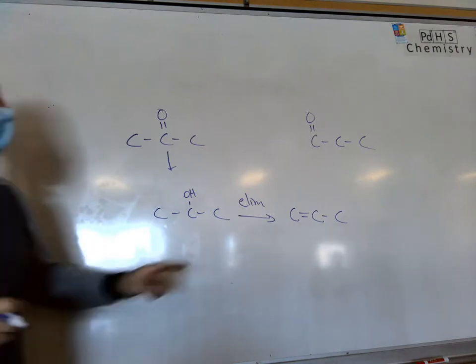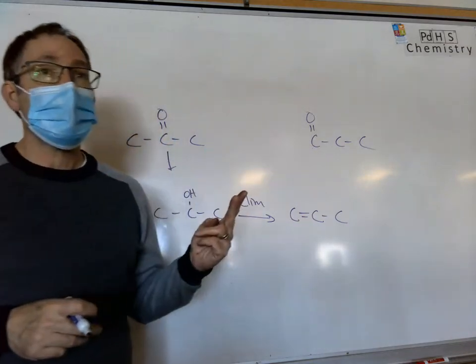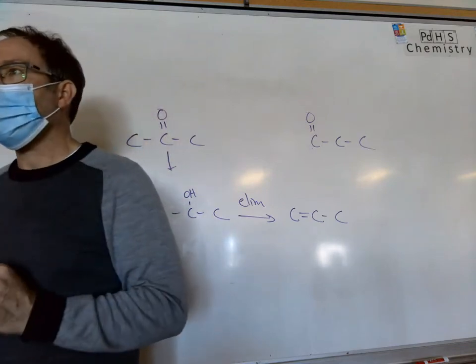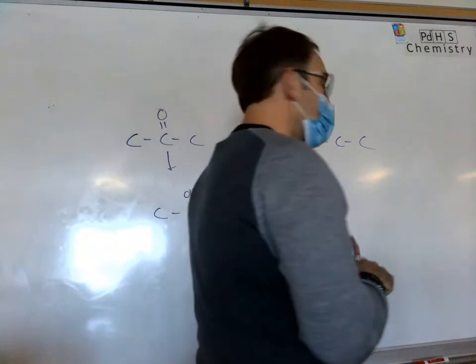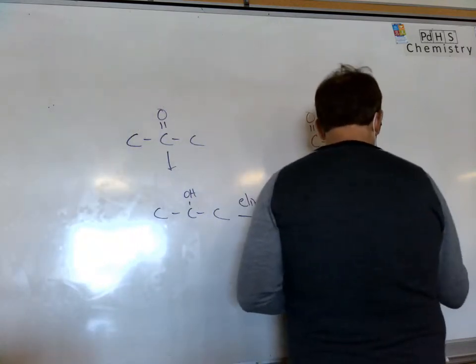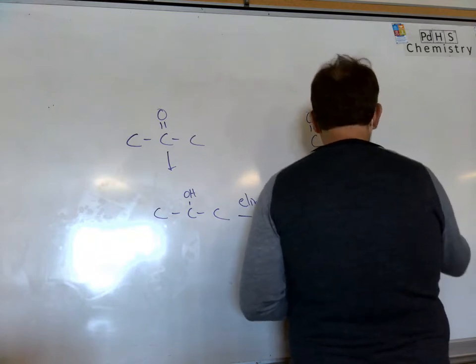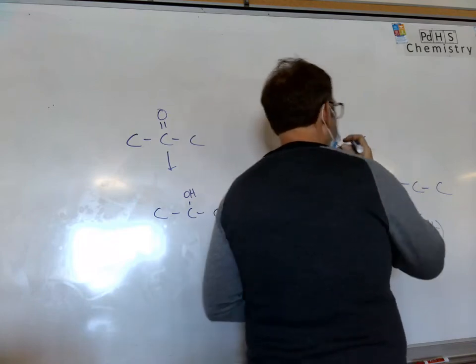We cannot add a double bonded functional group in, so we need two steps. Does anybody know our next step? Anybody, Brooke. Is it addition? We're going to add HOH, because we need an alcohol to be able to do this.